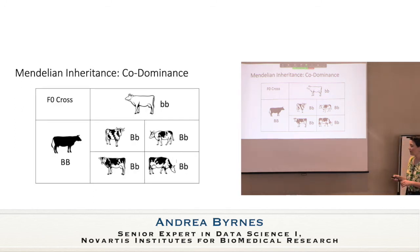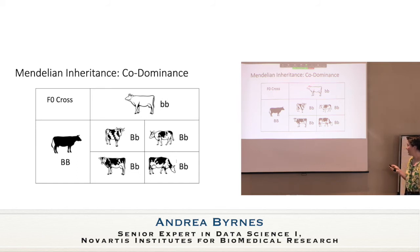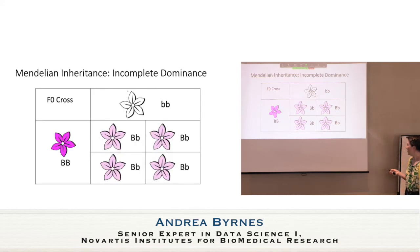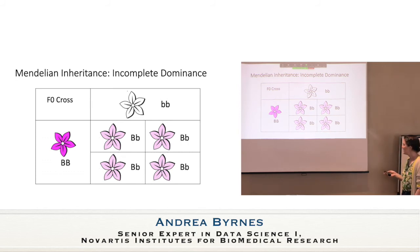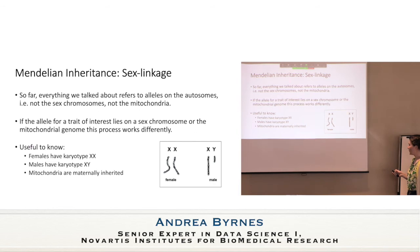Mendel also noted co-dominance: if you start with an organism that looks one way and another that looks another way, the offspring all have some phenotype in between. Another similar concept is incomplete dominance — for example, crossing white flowers with hot pink flowers might yield light pink flowers. This is more continuous, sort of a precursor to an additive effect idea. Mendel also hypothesized that sex linkage could be a thing.